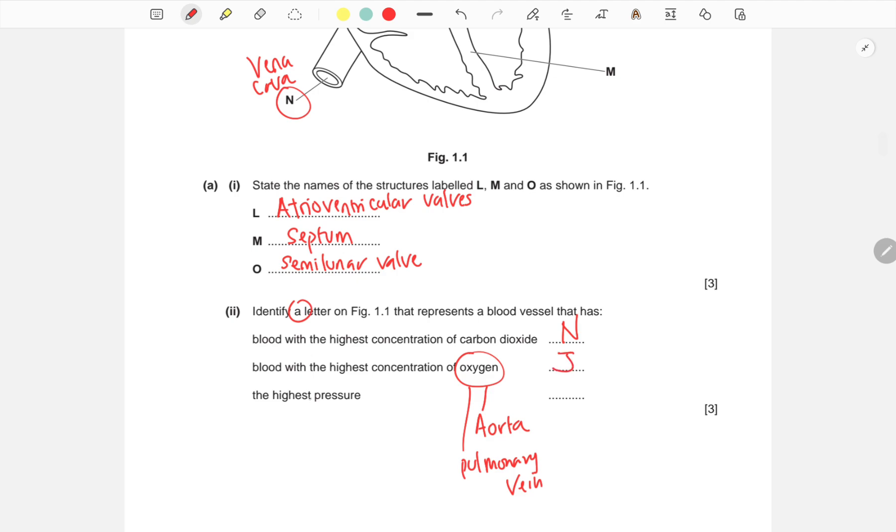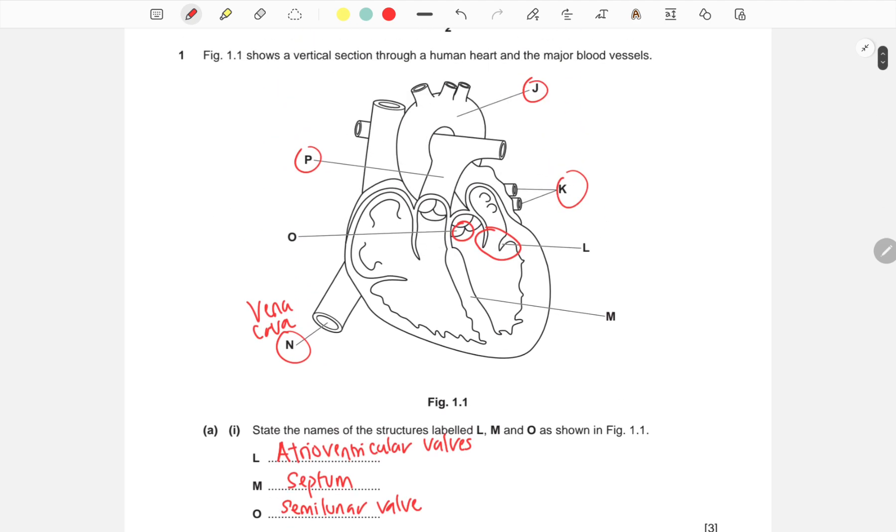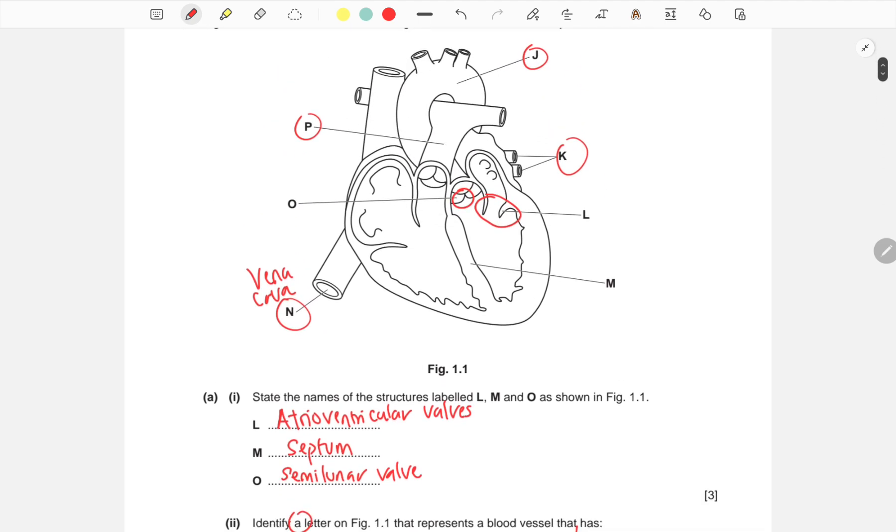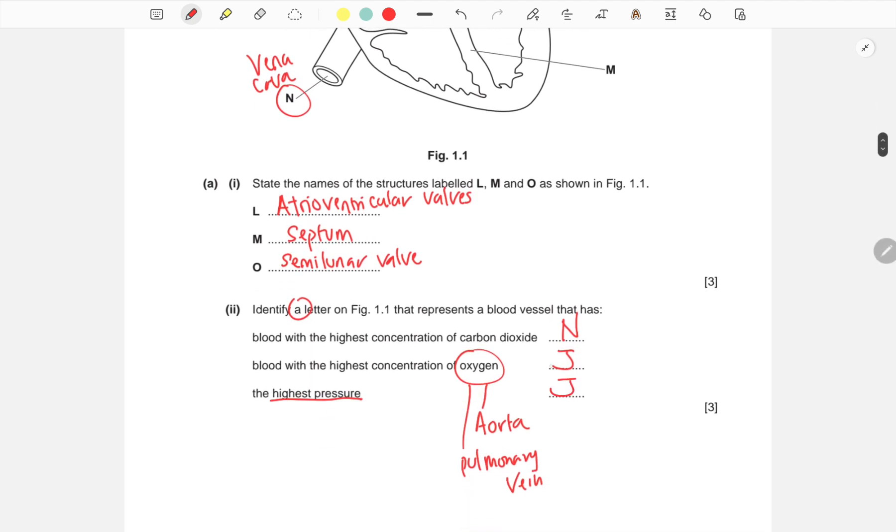The blood vessel containing the highest pressure is undoubtedly the aorta, which is J, because it pumps blood at a great distance to all the organs in your body.